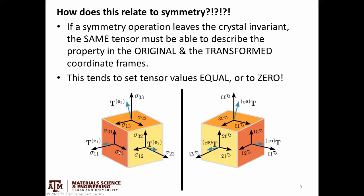then that same tensor has to be able to describe the property in original and transformed coordinate frames. And the effect is that this tends to place restrictions on some of these values of the tensor matrix. So no longer do I have nine independent values. I start to constrain them so I might have a far fewer number of independent values.